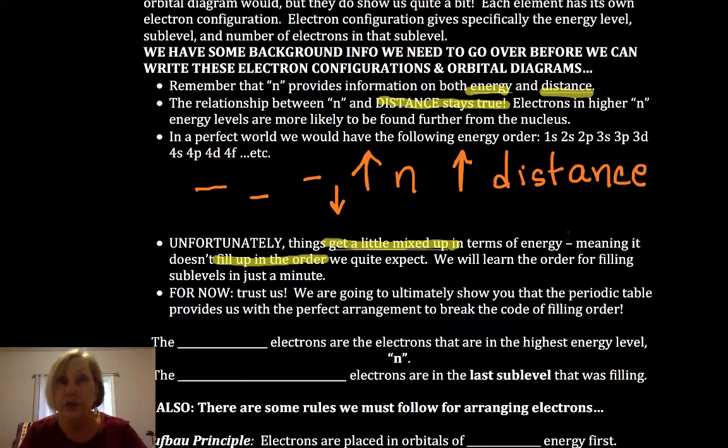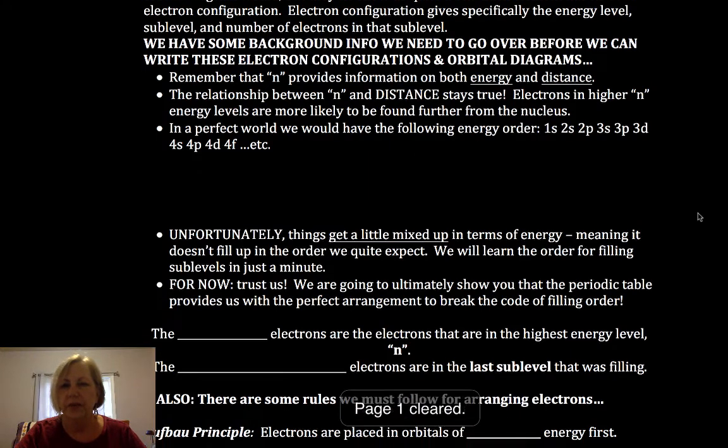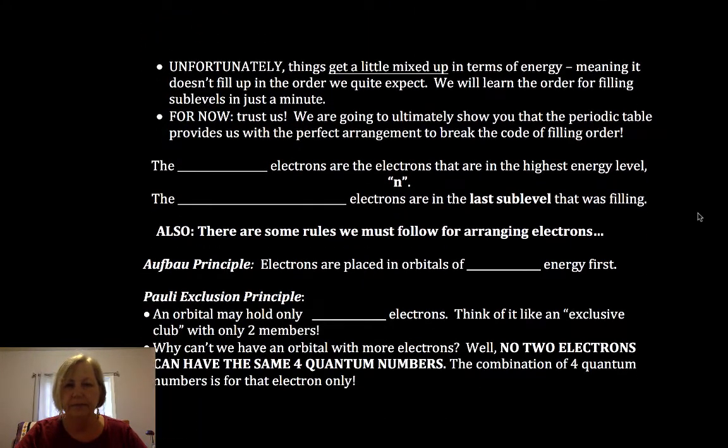Now, the good news is the periodic table is going to give us the perfect arrangement and it's going to break that code for filling order. You're not going to have to memorize anything. But it's challenging to get into that aspect of it before you see these models. So what I'm going to ask you to do is trust me. Trust me on the order. Just hold that thought for a minute and you'll see how the periodic table will provide us with what we need.